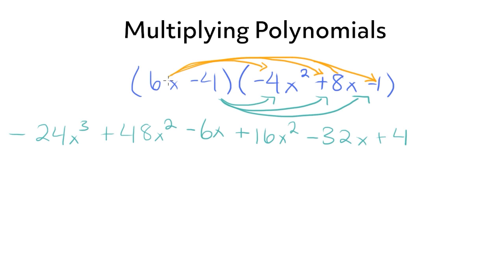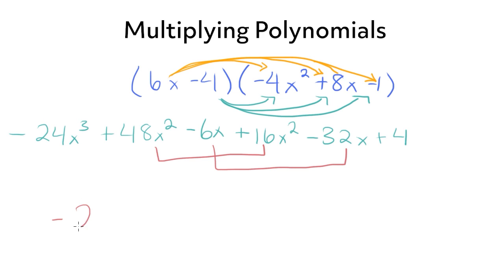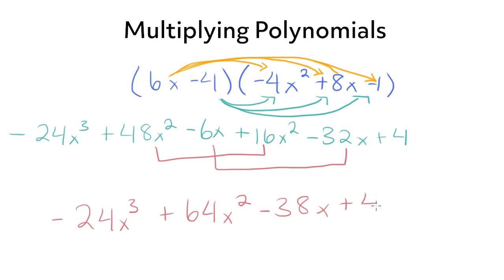Now all we have to do is combine our like terms. Be careful — the like terms aren't right next to each other. These two x squared terms are like terms, and these two x terms are like terms. So we leave negative 24x cubed, combine x squared terms to get plus 64x squared, combine x terms to get negative 38x, and plus 4 stays the same.